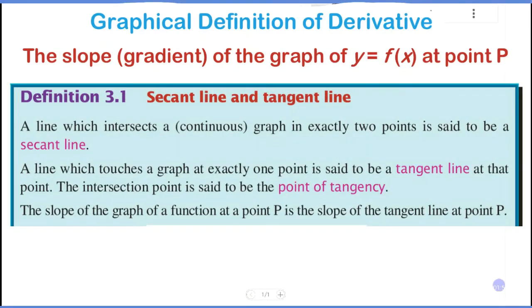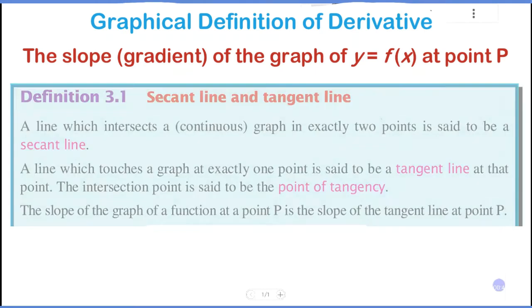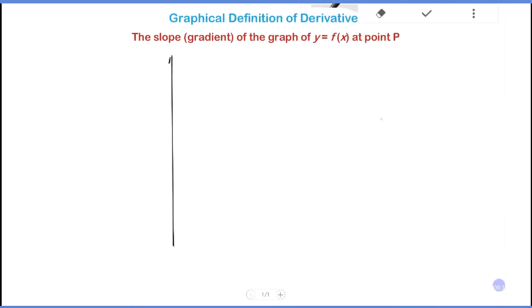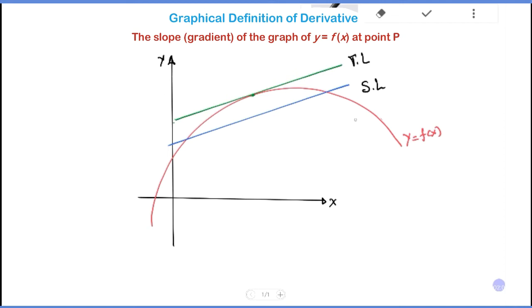A line which intersects a continuous graph in exactly two points is said to be a secant line. A line which touches a graph at exactly one point is said to be a tangent line at that point. The intersection point is said to be the point of tangency. The slope of the graph of a function at a point P is the slope of the tangent line at point P.